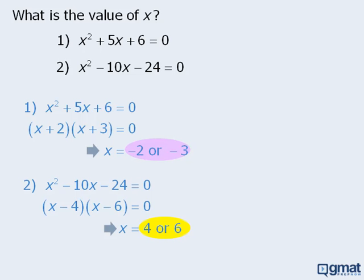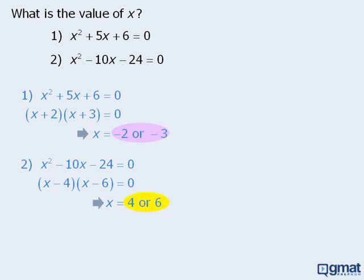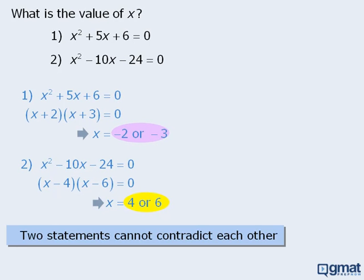It cannot be true. So it appears that these two statements contradict each other. But we know that the two statements in a data sufficiency question never contradict each other. So we must have made a mistake somewhere in our calculations.